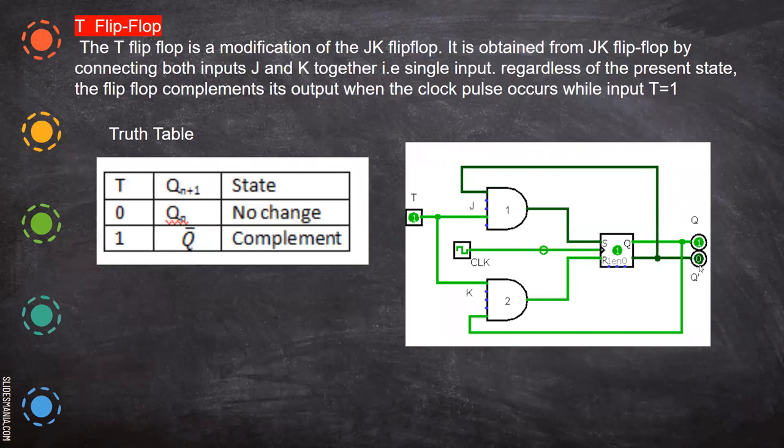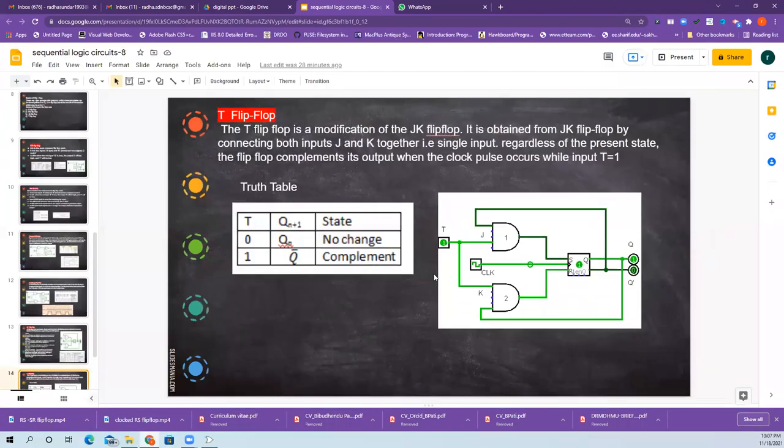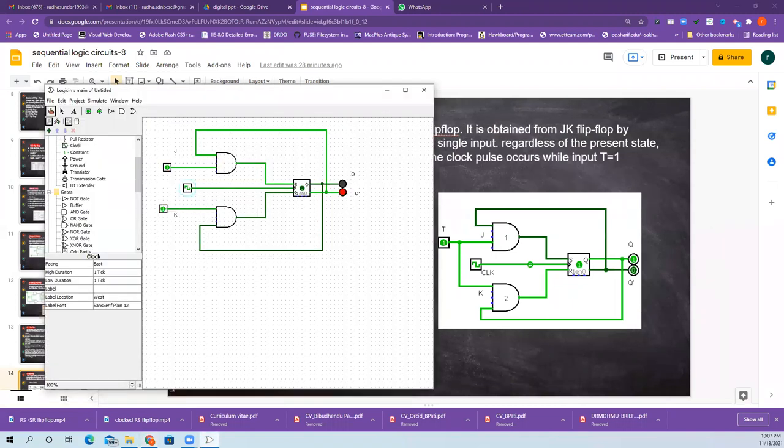Now we'll see the output. We'll check the logic circuit. This is the same circuit - the only thing is we have to connect both J and K together, so we'll do that.